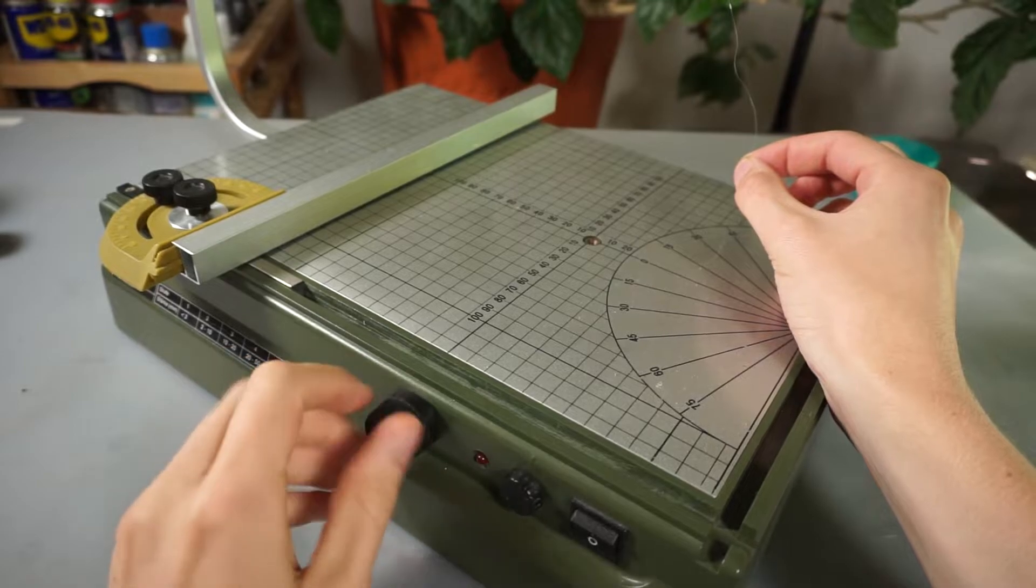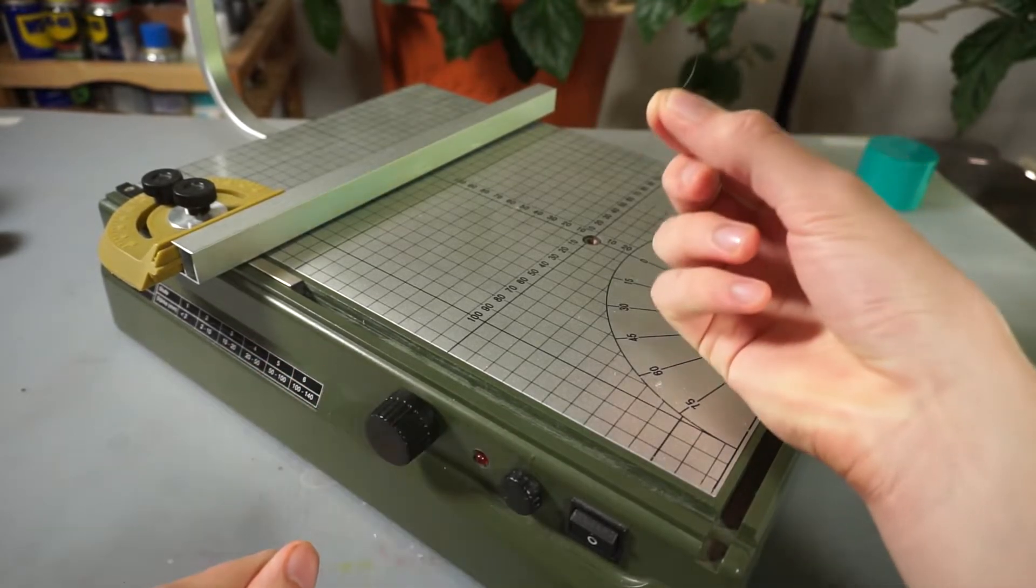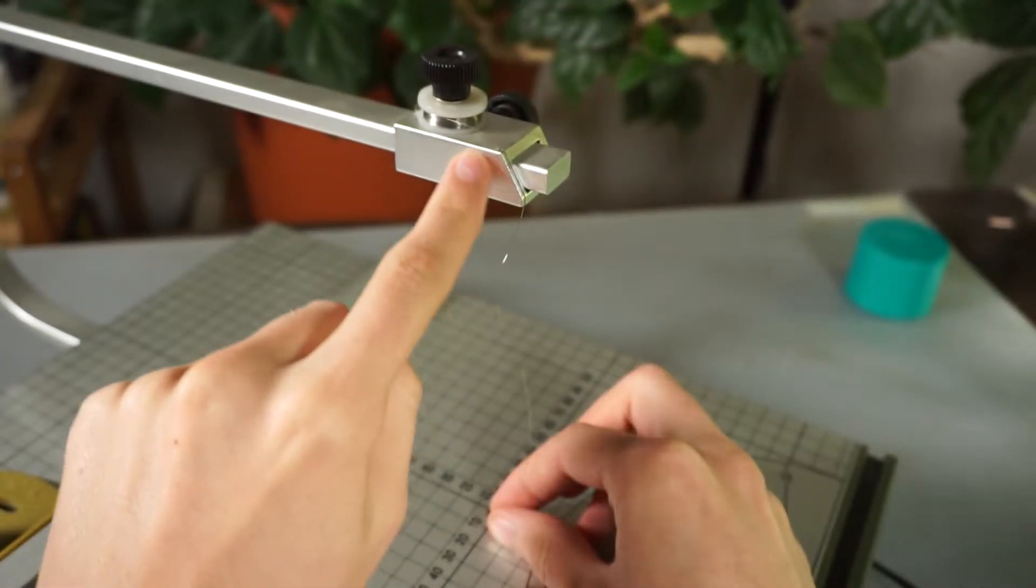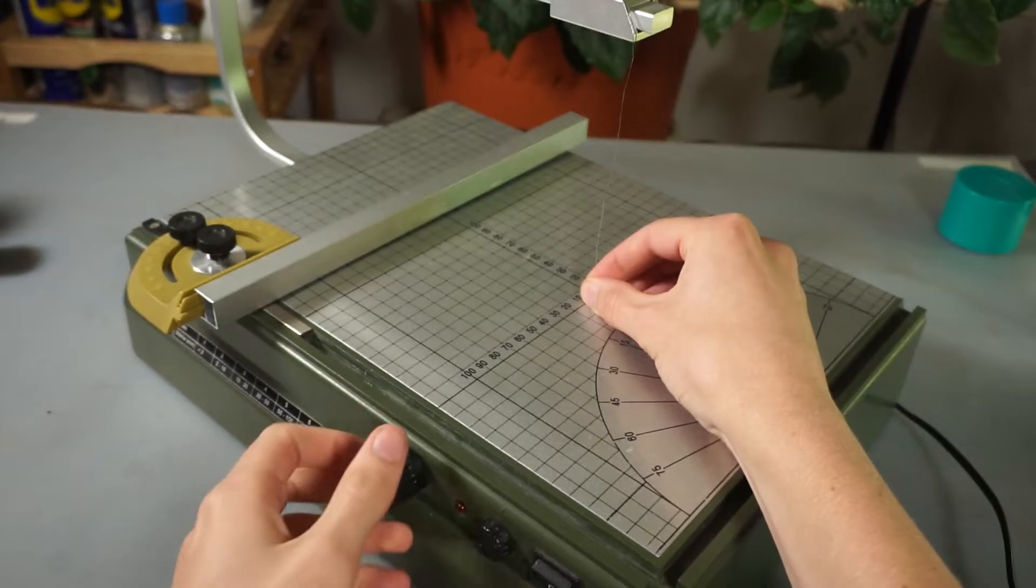On the front here there is a knob. Turn it anti-clockwise and now take your wire and put it in the hole there. Make sure your wire passes through this little groove. Then block the wire using this knob here.